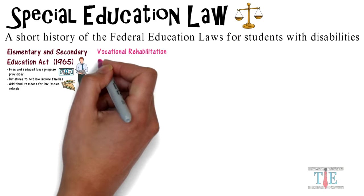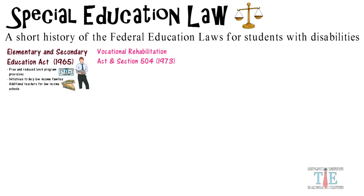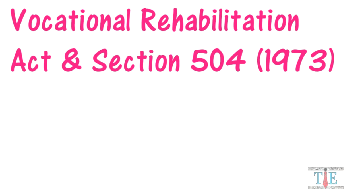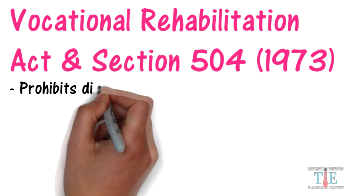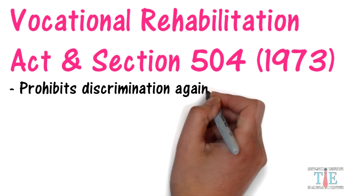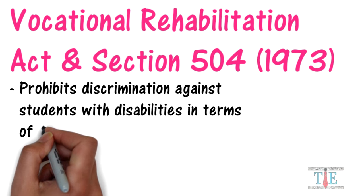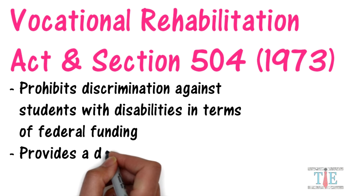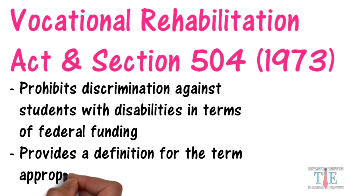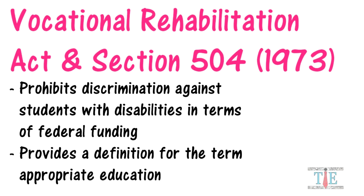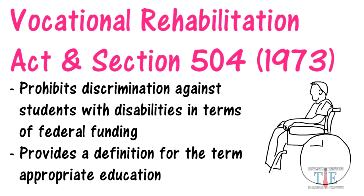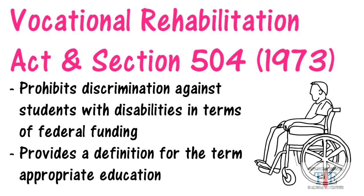Next, the Vocational Rehabilitation Act and Section 504 of 1973. The big takeaways from this law are that it prohibits discrimination against students with disabilities in terms of federal funding, and it provides a definition for the term 'appropriate education.' Educators, in particular, may pay attention to Section 504, which ensures that students with disabilities have equal access to education as other students.